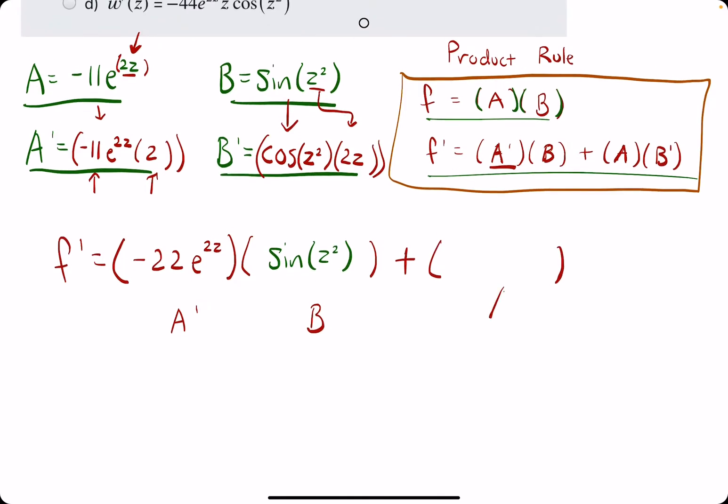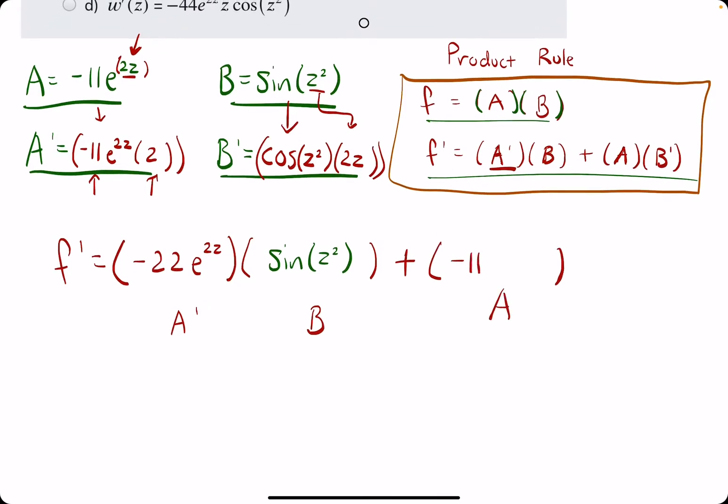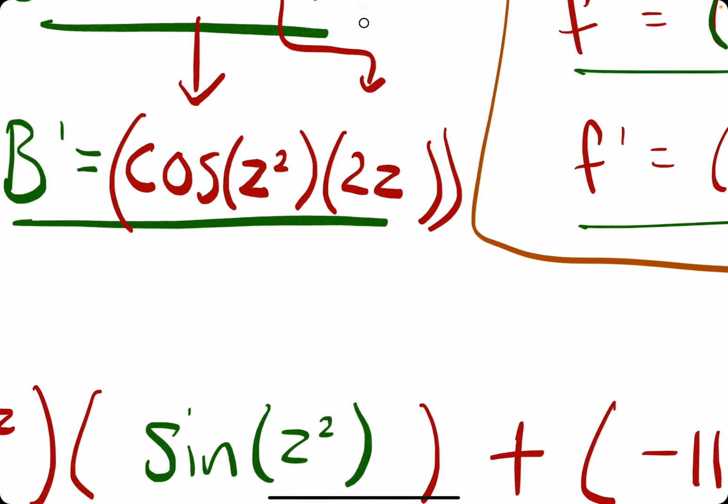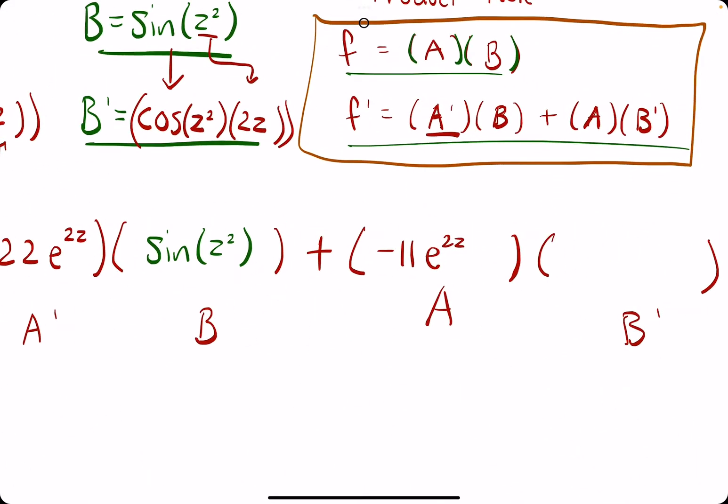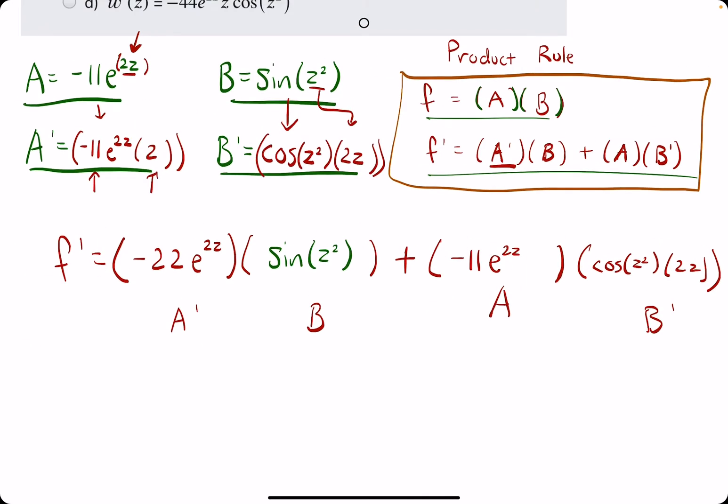Let's go ahead and just write them. So, A was negative 11E to the 2Z. And then, our last one is B prime, which is the entire thing we just found here. So, we have cosine of Z squared, all times 2Z. So, we are looking for these two paired together, plus these two big terms paired together.